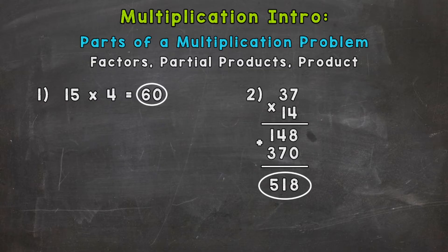We'll go through two example problems here, point out what these words mean, in order to get this down. So let's jump right into number one here, where we have 15 times 4 equals 60. So the two numbers that we multiplied together, the 15 and the 4, these are factors.